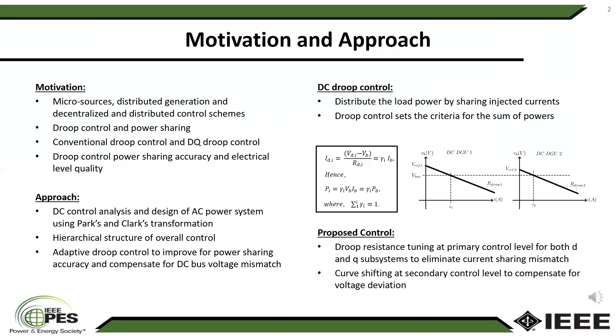For the proposed control, we propose droop resistance tuning at the primary control level and also curve shifting at the secondary control level to compensate for voltage deviation.